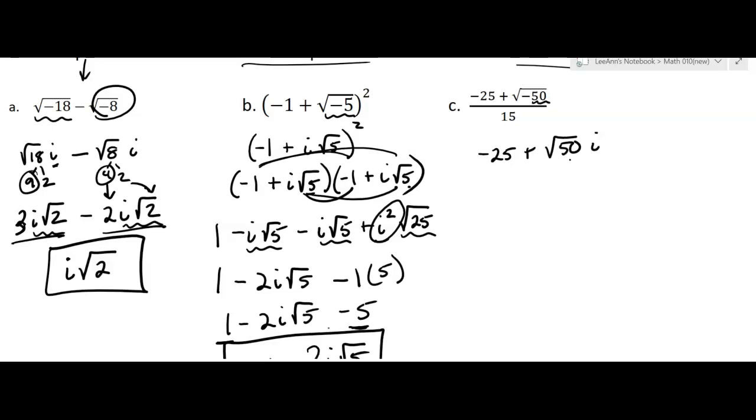And I'm going to have an i. And that 50 is going to split up into 25 times 2. And I'm going to take the square root of that. By the way, this is all over 15. Okay, so I've got negative 25 plus 5i square root 2. And it's over 15.